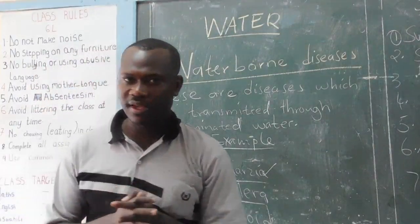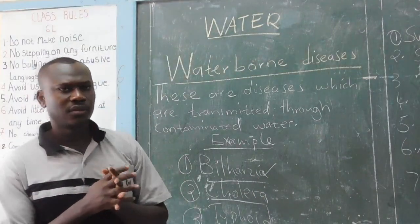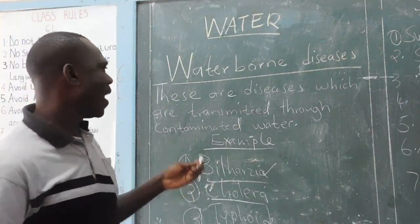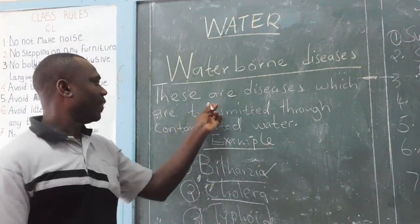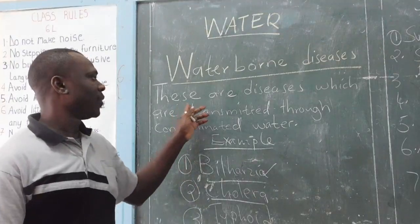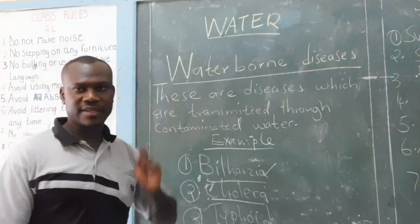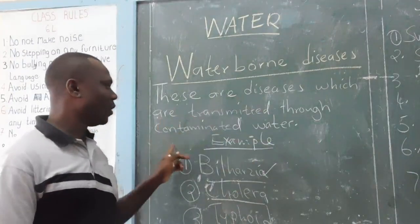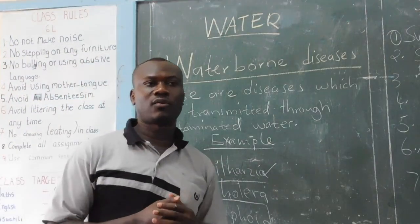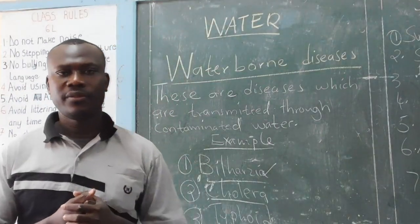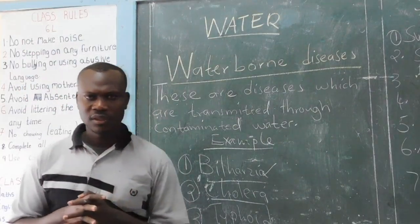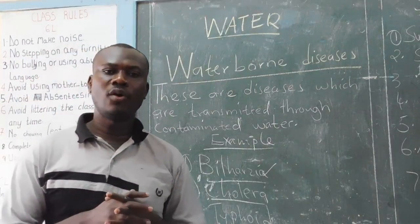Take one minute and think about them. Waterborne diseases are diseases that are caused or transmitted through contaminated water. These are diseases that are transmitted through contaminated water. We have three main waterborne diseases.